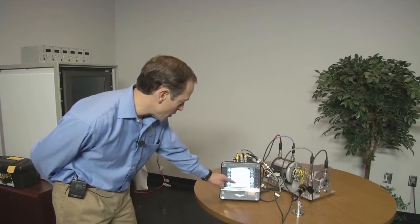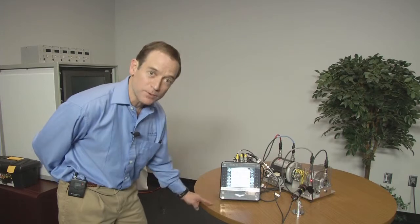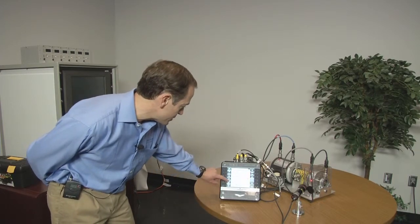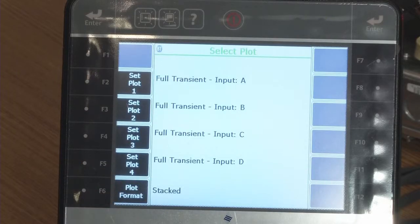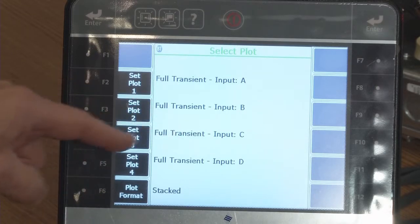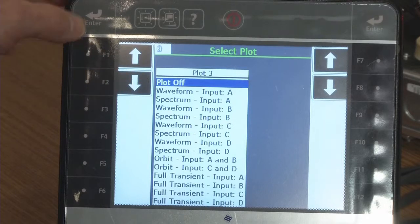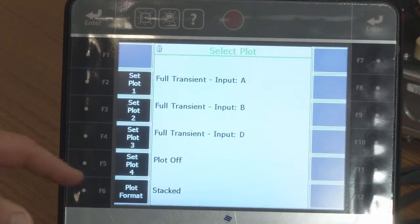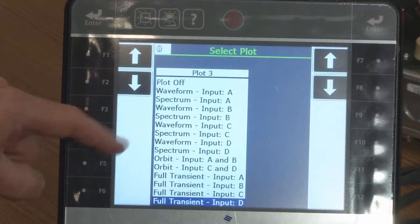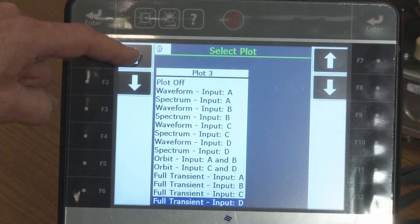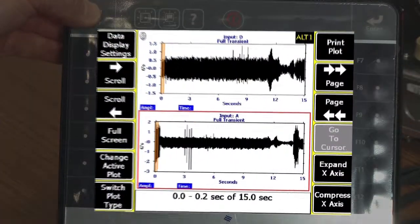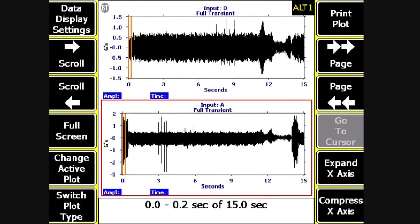To actually blow up on one of these waveforms for higher resolution, I can change my active plot, go in to change my type, and what I'm going to do is turn off a couple of these other plots. So now I'm looking at the channel A and channel D plots for a lot higher resolution.